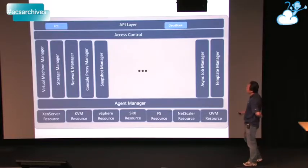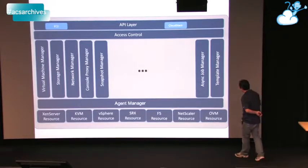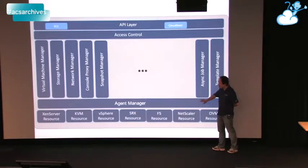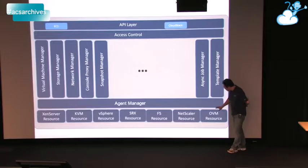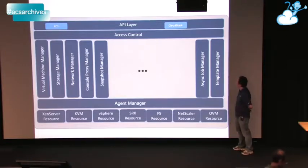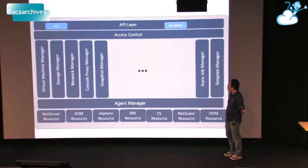What we have up here is the current architecture of CloudStack. Our agent manager down here is our messaging bus, and we talk to a bunch of resources that we use to talk to all the physical resources. Above those are controlled by different managers. They all have their own processes, and at the very top is our web services API layer.